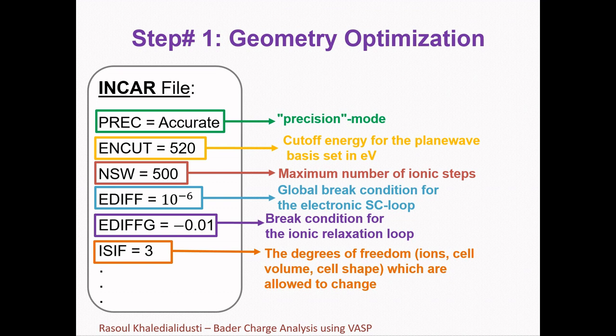The first step of the Bader charge analysis is making our desired geometry, either through geometry relaxation, experiments, or any other method of our choice. If we don't have a relaxed or optimized geometry, we need to first relax our geometry using VASP. The POSCAR, POTCAR, and K-Points files are dependent on the system that we are going to relax. We need to use the corresponding POTCAR file for our system with the exchange and correlation functional that we desire, for example PBE or LDA.